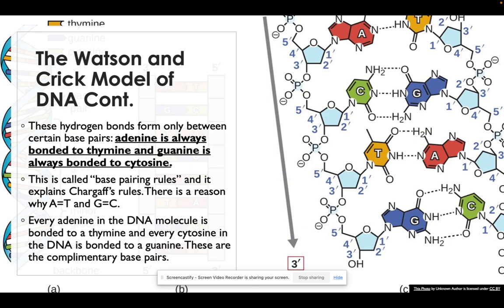These hydrogen bonds form only between certain base pairs. Adenine is always bonded to thymine and guanine always paired to cytosine, which you can see on the right-hand side—they are color-coded. This is called the base pairing rules and it explains Chargaff's rule. There's a reason why adenine equals thymine and guanine equals cytosine. Every adenine in the DNA molecule is bonded to a thymine and every cytosine in the DNA will be bonded to a guanine. They are complementary base pairs.